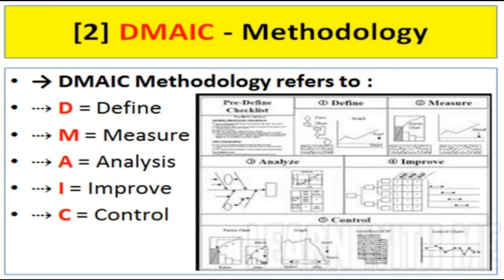First, define what the problem is. Next, measure the current situation. Then implement the solution. Then analyze the solution and analyze the result. Next, improve. Then control — define and control the problem so it does not repeat.